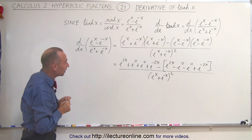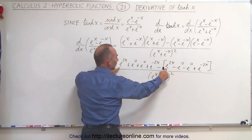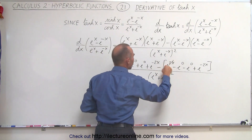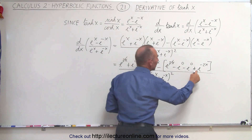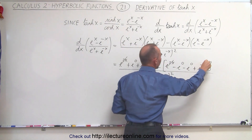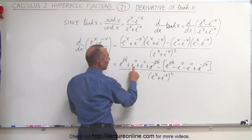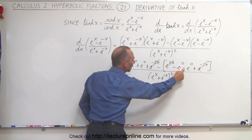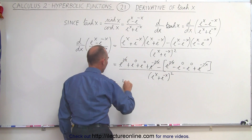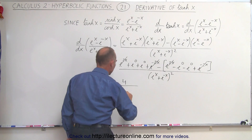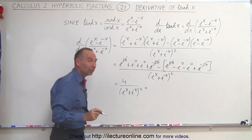Now let's cancel terms in the numerator. We have e to the 2x minus e to the 2x, so those cancel. We have e to the minus 2x and minus e to the minus 2x, so those cancel. Finally, we have e to the zero, which is 1 plus 1, and the negative negates the two negatives, giving us 1 plus 1 plus 1 plus 1, or 4, divided by (e to the x plus e to the minus x) squared.